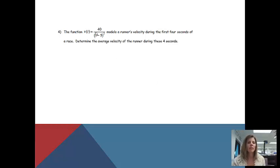The function v of t equals 40 over t minus 5 squared models a runner's velocity during the first 4 seconds of a race. Determine the average velocity of the runner during these seconds. So this time, instead of doing an average something, it's just telling us to find the average velocity.